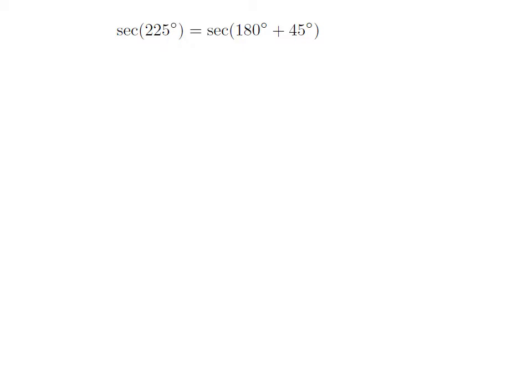As 225 degrees equals 180 degrees plus 45 degrees, secant of 225 degrees is equal to secant of 180 degrees plus 45 degrees.